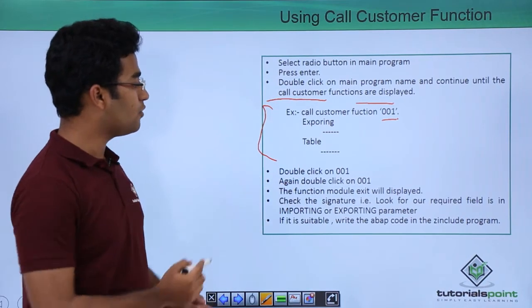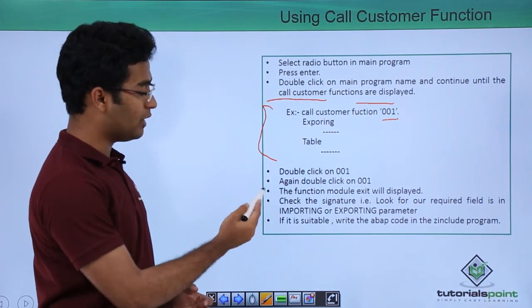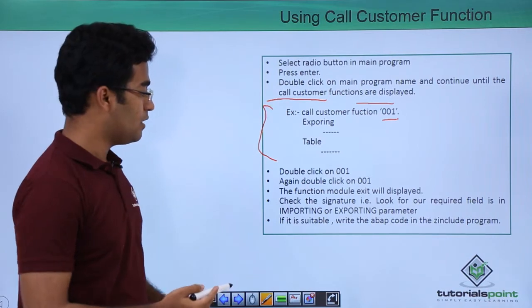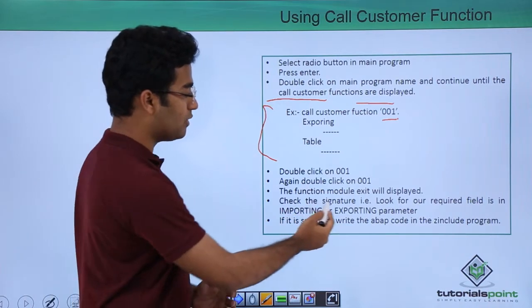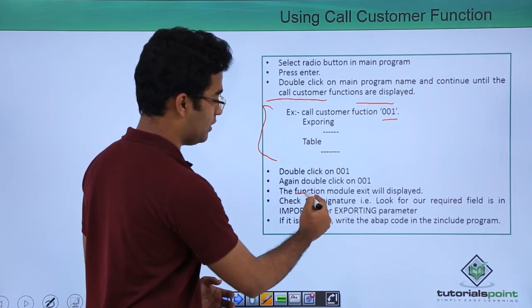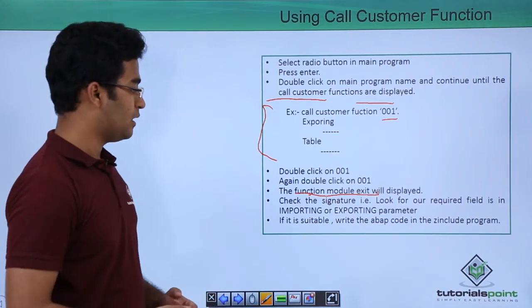We have to double-click on 001, and again double-click on 001 — the function module exit would be displayed. Here, the function module exit will be displayed.